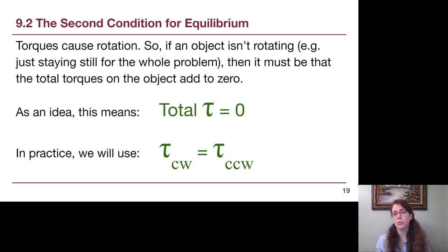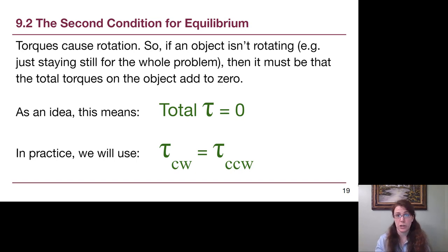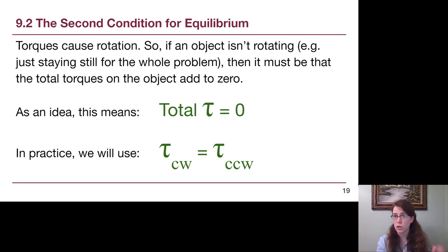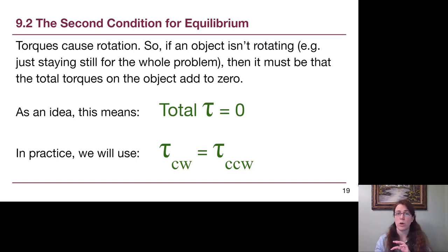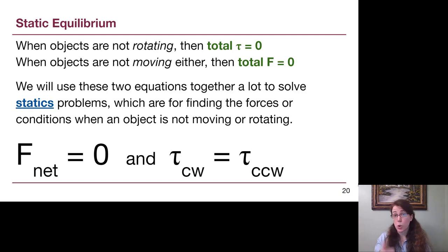Torque is the rotational ability of a force. We had the equation for torque — it's the force times the distance with the perpendicular idea built in. Another condition for equilibrium is that we don't have rotation, meaning all torques added together have to equal zero. All clockwise torques must equal and balance all counterclockwise torques. In Physics 125, we describe torque direction as clockwise versus counterclockwise — which way is it trying to rotate.